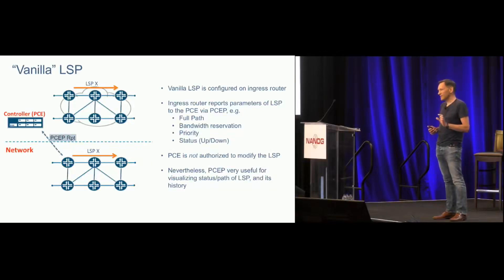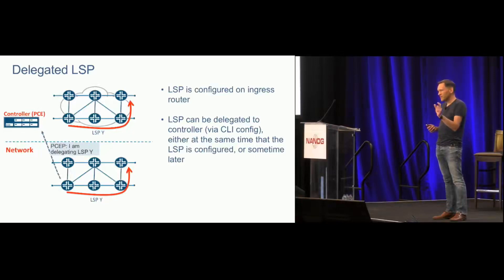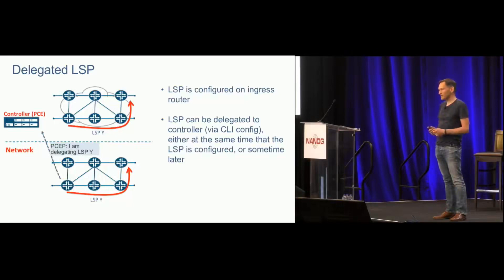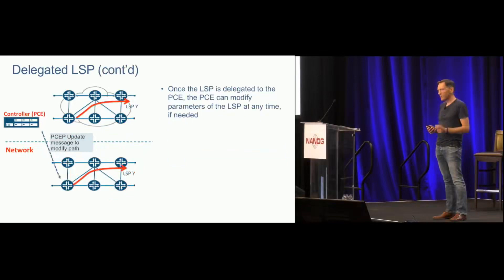The PCE is not authorized to modify a vanilla LSP — it hasn't been granted permission. On the other hand, there's a delegated LSP type. You can convert a vanilla LSP into a delegated one with just a couple of extra lines of CLI config on the ingress router, granting delegation to the controller. A PCEP message is sent from the ingress router saying 'this LSP — I'm delegating it to you; you have permission to make modifications.' Over the LSP's lifetime, the controller can modify its path, for example to avoid congestion or allow maintenance on a node the LSP passes through, by sending a PCEP update message specifying the new path.